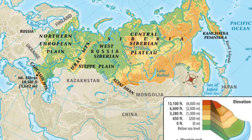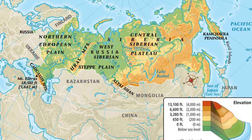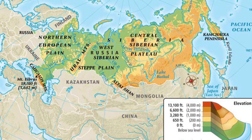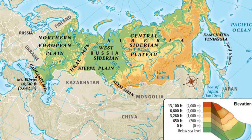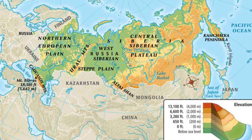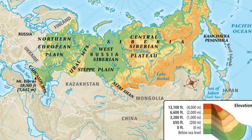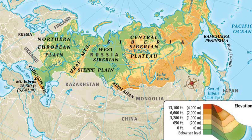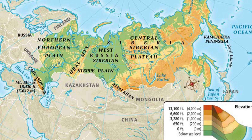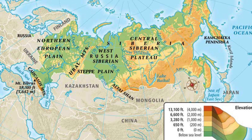Subsection one: mountains and plateaus. The first is the Ural Mountains, probably one of the most important mountain ranges in Russia. The Ural Mountains divide Europe from Asia. They run north and south. To the west of the Ural Mountains, you have the North European Plain. To the east, you have Siberia. You'll notice that population density is affected by these mountains, as most of the population is west of them.